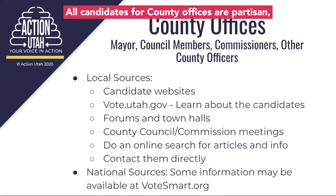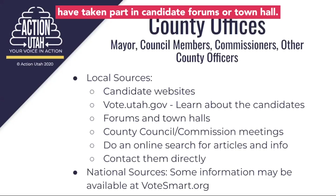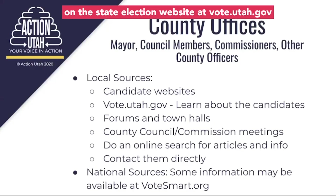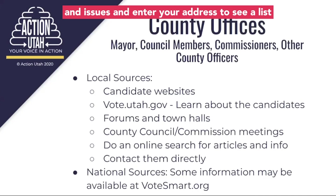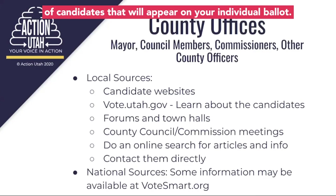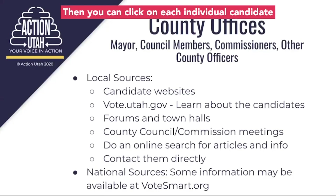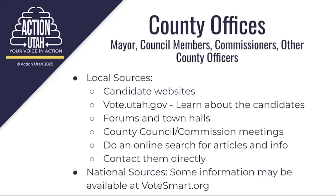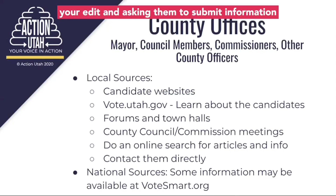All candidates for county offices are partisan and they may have candidate websites or even have taken part in candidate forums or town halls, so that's one good way to learn about them. Candidates can also choose to post information about themselves on the state election website at vote.utah.gov. Simply click "learn about the candidates and issues" and enter your address to see a list of candidates that will appear on your individual ballot. Then you can click on each individual candidate and see if there's any information posted about them. If not, you can always consider contacting your candidate and asking them to submit information for Utah voters.